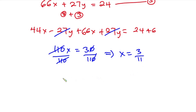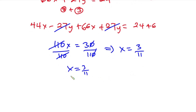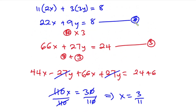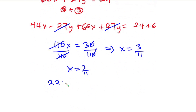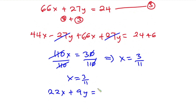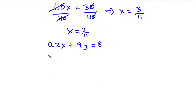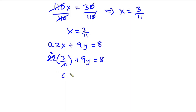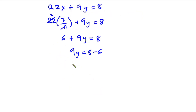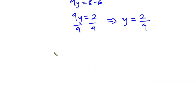Since x = 3/11, let's substitute into equation hash: 22x + 9y = 8. Substituting gives 22 × (3/11) + 9y = 8. Since 11 goes into 22 twice, we get 6 + 9y = 8. So 9y = 8 − 6 = 2, which means y = 2/9.